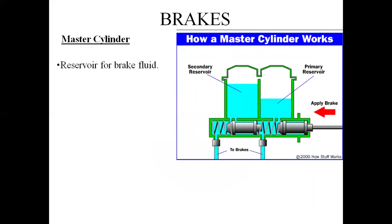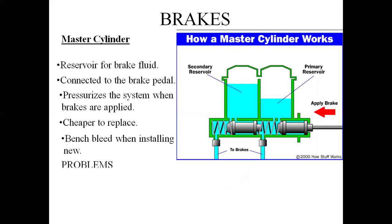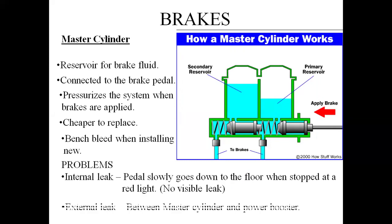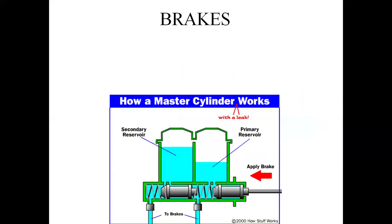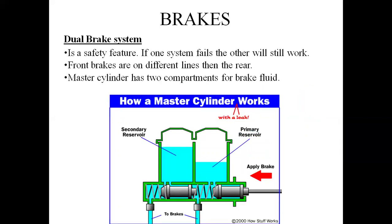The master cylinder works with a reservoir and brake pedal pressure system. Pressure is passed through tubes called bundy tubes. If there is a leakage, we have to fix that leakage. The brake system has two compartments for brake fluid — primary and secondary — for the front and rear brakes on different lines.